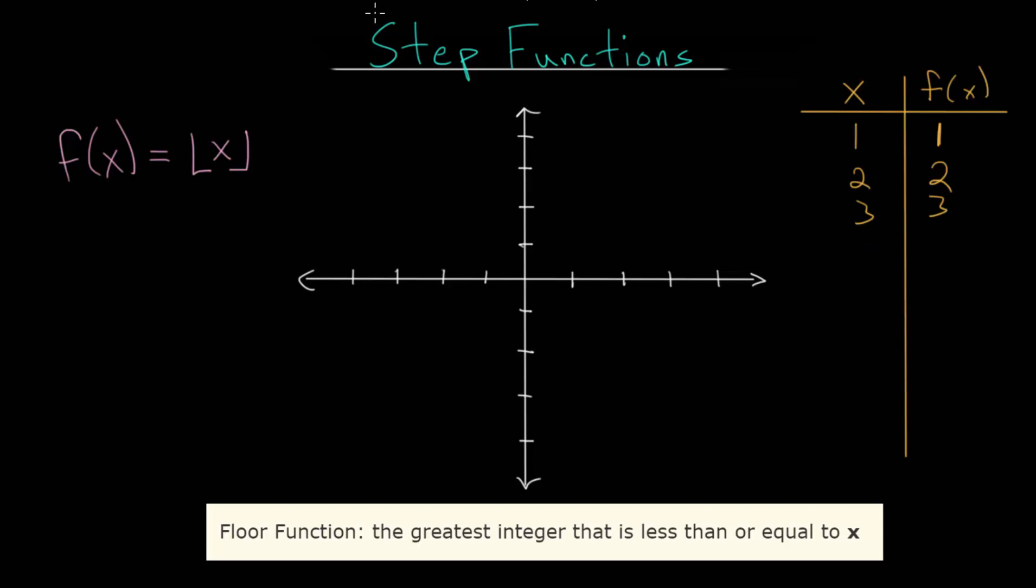But this function does become interesting when you plug in decimals. Let's say we plug in 1.4. So the y value is the greatest integer that is less than or equal to 1.4 in this case. So the integer that is less than this, and the greatest integer less than this, would be 1.